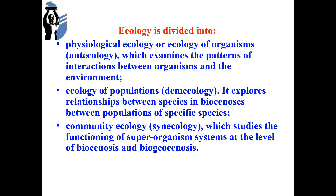Ecology is divided into two main branches. The first is physiological ecology, or ecology of organisms — autecology — which examines the patterns of interactions between organisms and the environment. The second is ecology of populations, or demecology, which explores the relationships between species in biocenosis and between populations of specific species. Another branch is community ecology, or synecology, which studies the functioning of superorganism systems at the level of biocenosis and biogeocenosis.